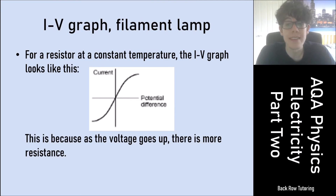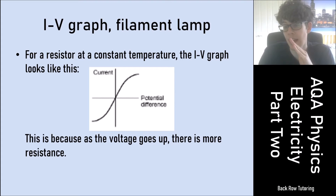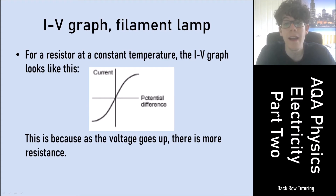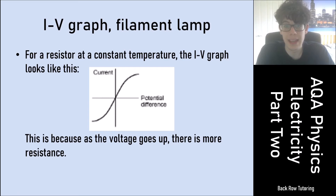For a filament lamp, the IV graph looks different — you get a lazy S-shape. Near zero potential difference the relationship looks roughly linear, but as potential difference increases further from zero the current increases at a much slower rate. You need to know this: the filament lamp or bulb produces a lazy S-shape on the IV graph.